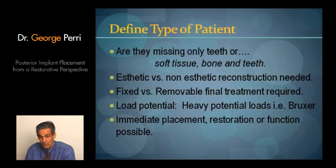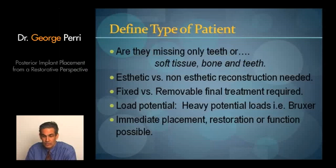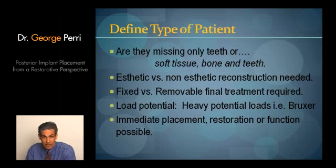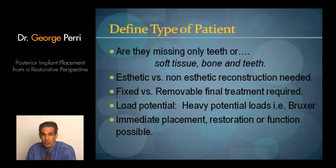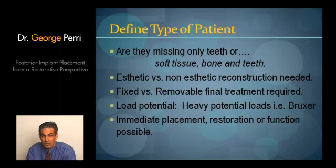We need to talk to the patient about whether an aesthetic or non-aesthetic reconstruction is required. There are times — and we'll get into this in a future session — when a removable restoration is actually better than a fixed restoration. If we have significant bone and soft tissue loss and a huge defect, a fixed result may not be to the patient's advantage as much as a removable result, which could have a significant acrylic flange to obturate the defect. We also try to get a feel for the load potential. Expect that any bruxing patient will eventually destroy whatever you put in their mouth — whether conventional, removable, or implant dentistry. We need to treatment plan these patients differently and educate them about their potential to destroy restorations.